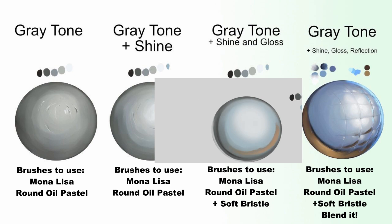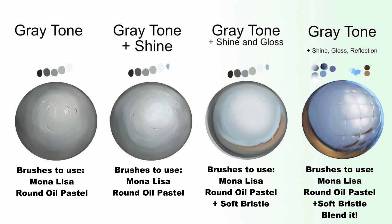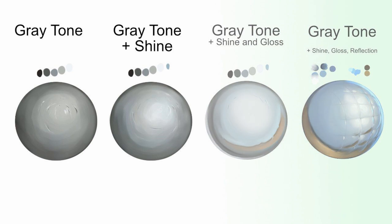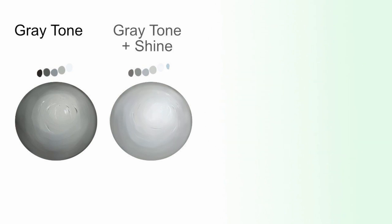Gray tone with shine, gloss, and reflection creates a very polished surface where you can add high detail reflection all along it. Use a combination of the previous techniques with added colors and it will give a very soft blend.